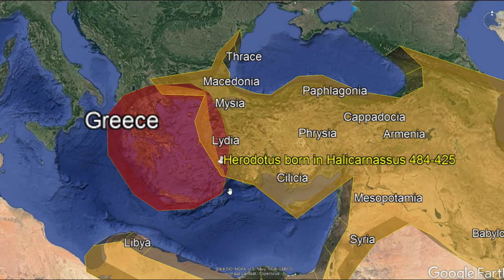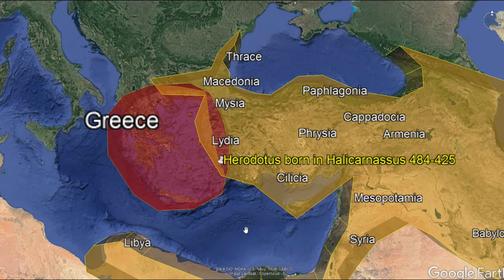If you were born in Halicarnassus, you would have seen the Persians overrun you, and then the Greeks try to come back, and the Persians try to overrun you again. You would have to balance as an individual to live through this and try to ally yourself with a certain force so you don't get killed. As you can see, he's right there in the middle of all this. That becomes really interesting.